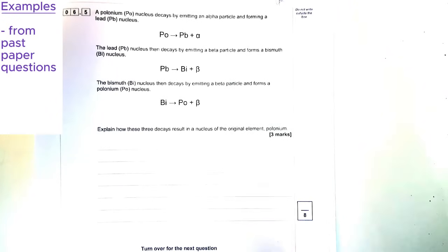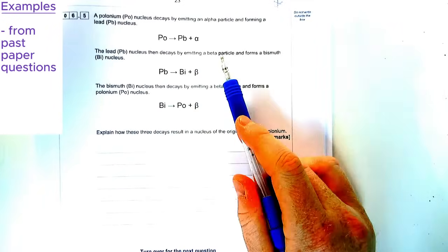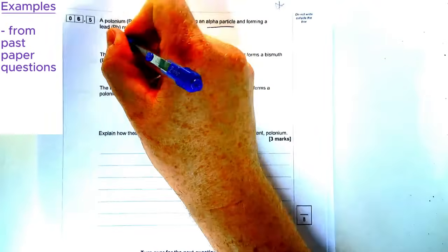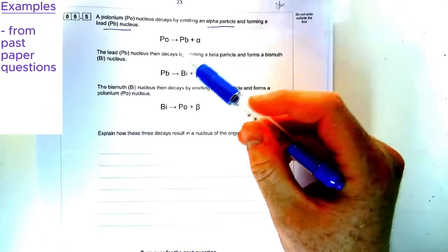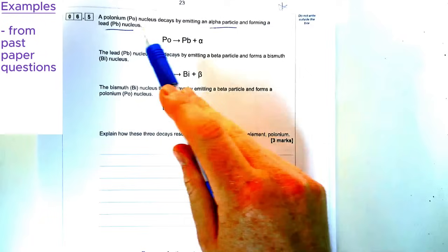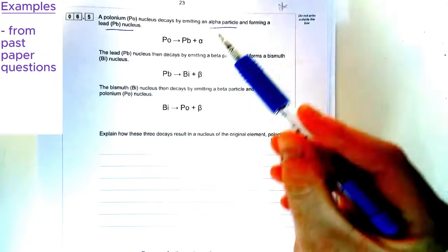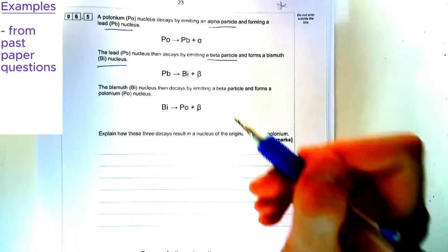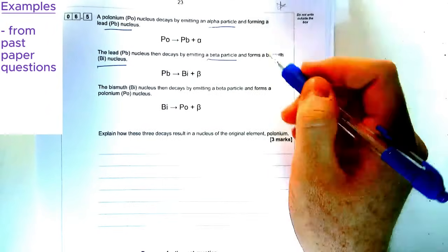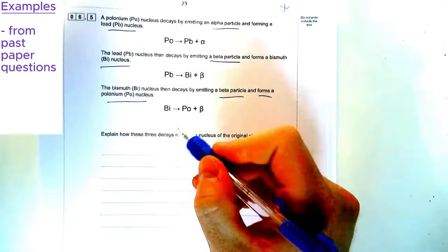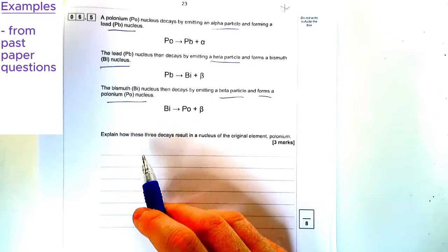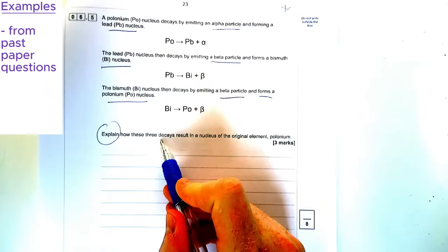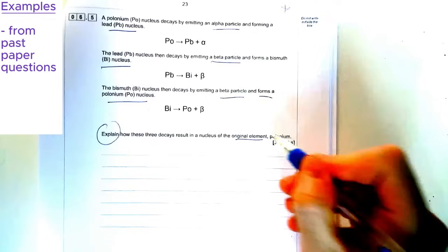For the first question we're going to have a look at, we've got this question here from the 2021 physics paper and it talks about polonium decaying into a nucleus. We've got alpha particles emitted here, lead particles, but the question itself looks really confusing. It's almost like another language. You've got polonium arrow and then it's Pb lead plus an alpha particle and you've got lead decays emits a beta particle and forms this thing called bismuth. The question is actually asking you for is not too complex. So it's one of those interesting questions, a little bit different to normal, but the question says explain how these three decays result in a nucleus of the original element polonium.